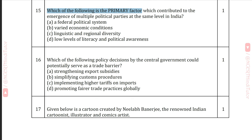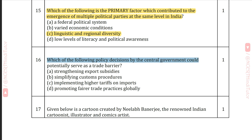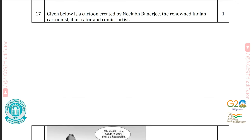Question 15: Which of the following is the primary factor that contributed to the emergence of multiple political parties at the same level in India? Answer C: Linguistic and regional diversity. Question 16: Which of the following policy decisions by the central government could potentially serve as a trade barrier? Answer C: Implementing higher tariffs on imports.